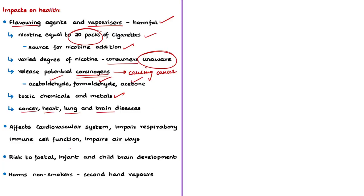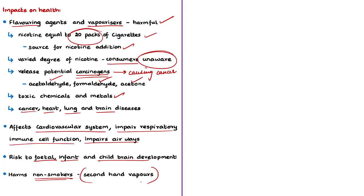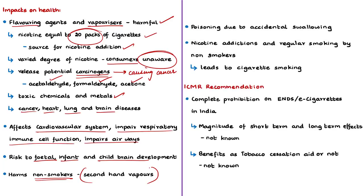The liquid vaporizing solutions contain toxic chemicals and metals responsible for several adverse health effects including cancers and diseases of the heart, lungs and brain. E-cigarette use adversely affects the cardiovascular system, impairs respiratory immune cell function, impairs airways similar to normal cigarette smoking and is responsible for severe respiratory disease. It also poses a risk to fetal, infant and child brain development. ENDS are also harmful to non-users who have adverse health impacts even when exposed to second-hand vapors exhaled by smokers. Passive exposure to vapors during pregnancy can severely affect the health of both the mother and fetus.